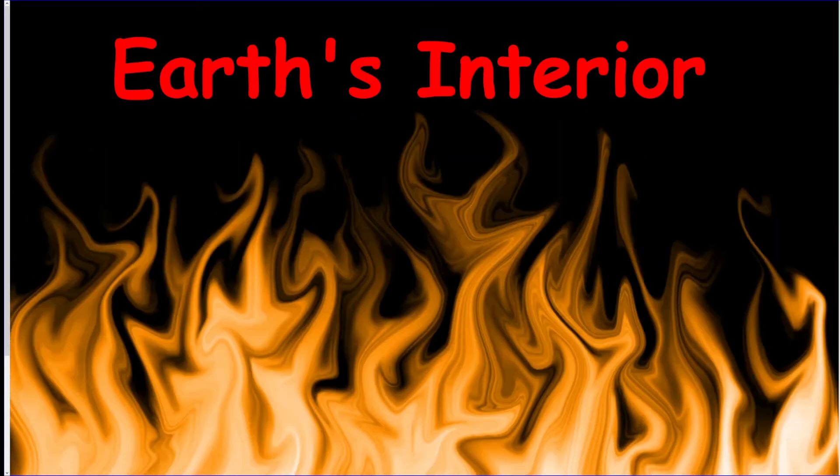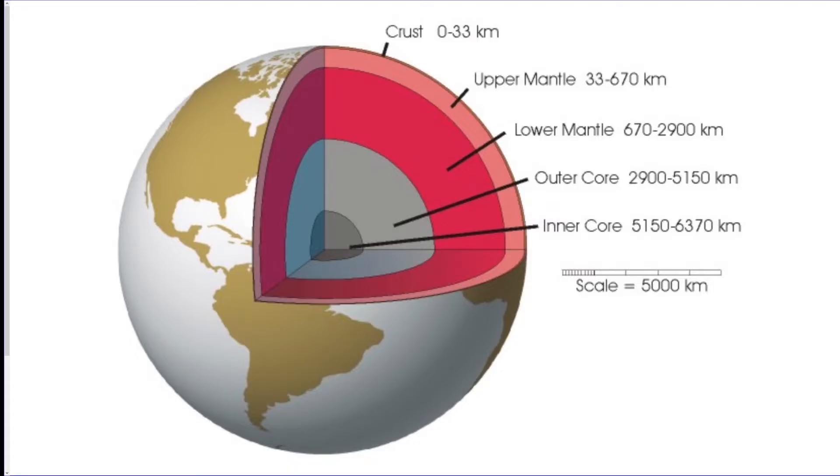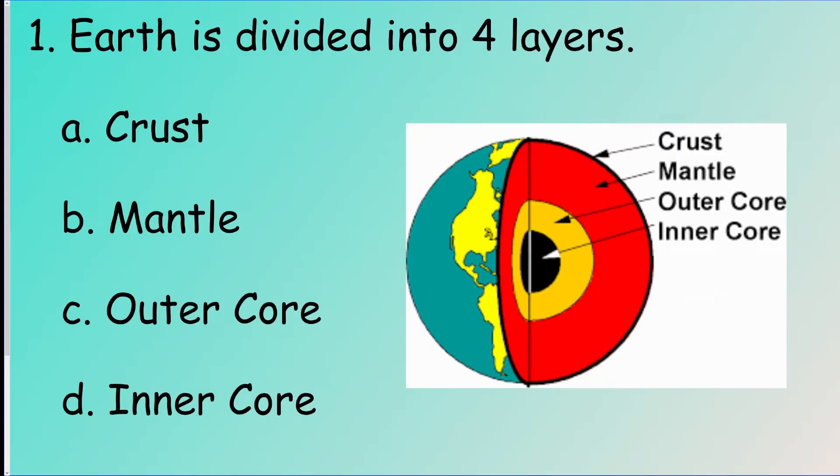All right, so now we're going to go into the earth. Here's our four layers, just so you see them all in one picture here. We got the crust, which is the outside layer, then we got the mantle, the outer core, and the inner core. So we're going to divide it into four layers here. Crust, mantle, outer core, inner core.